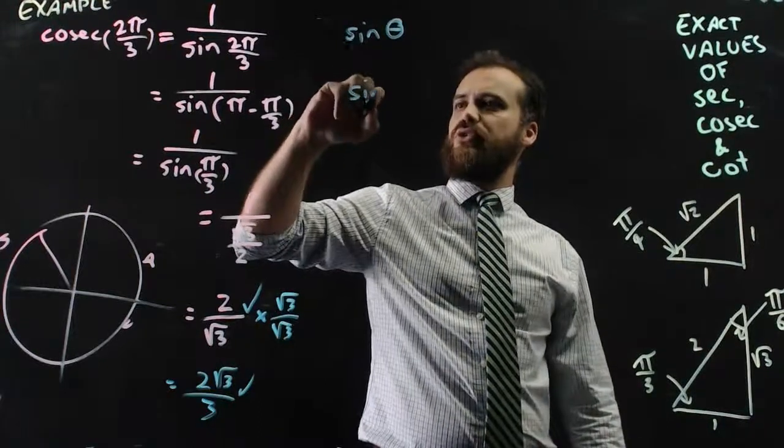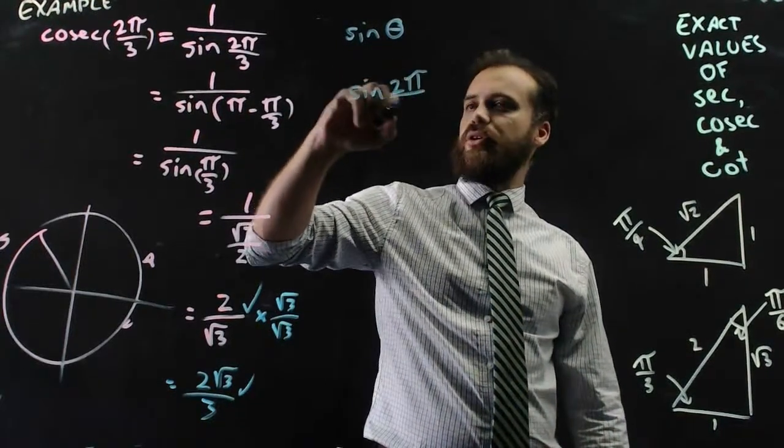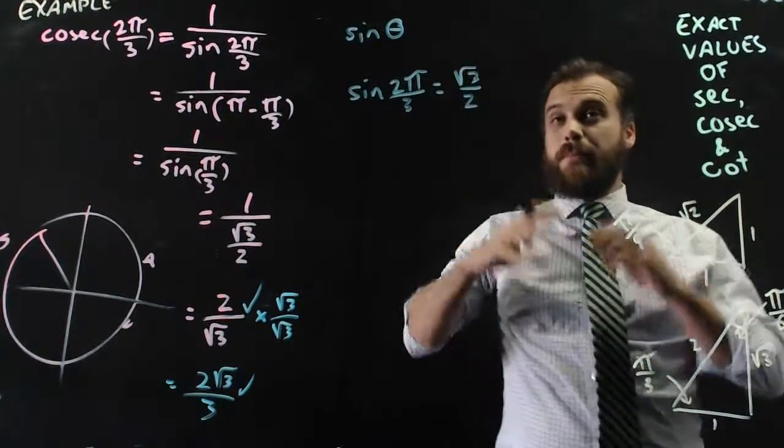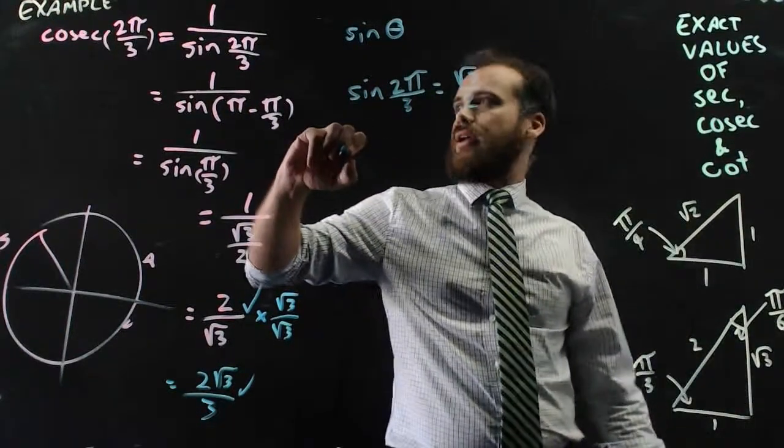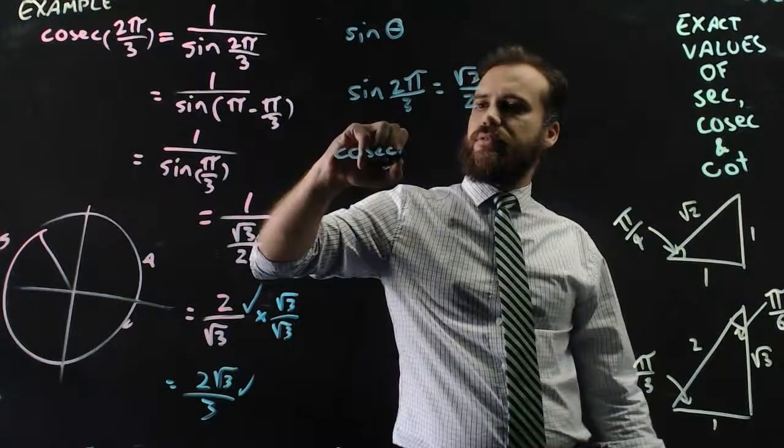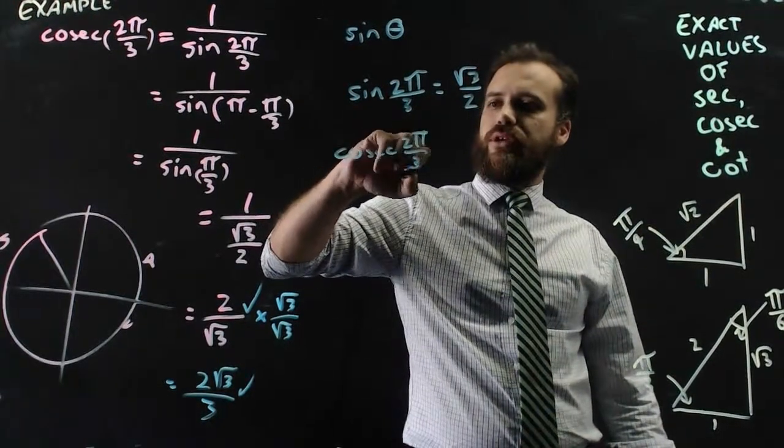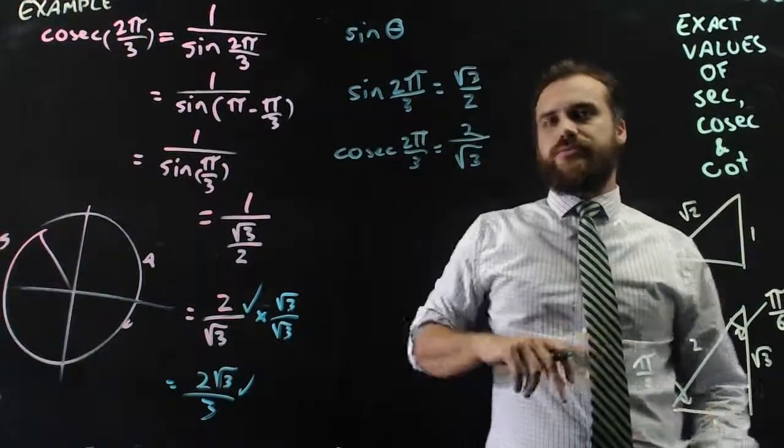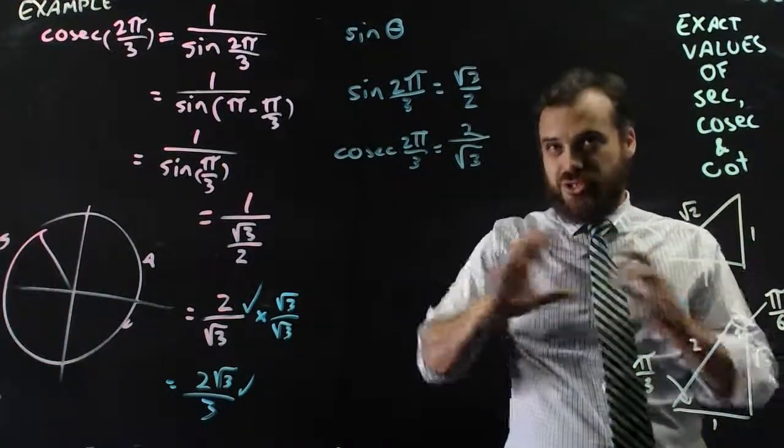So sine θ always equals 1 over cosec θ. In this particular case, where if you know that sine 2π/3 equals √3/2, you should immediately know that cosec 2π/3 is equal to 2/√3. Those are things that should just jump at you straight away.